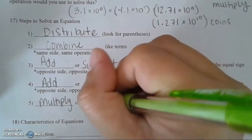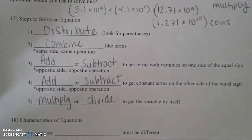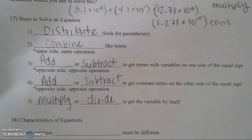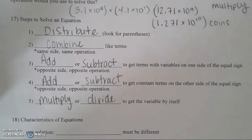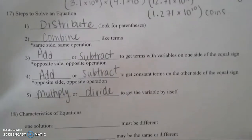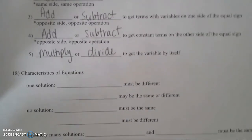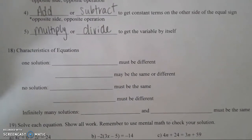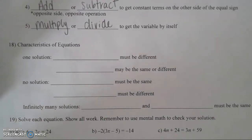To recap: first distribute, then combine like terms, then add or subtract your variables, then add or subtract your constant terms, and finally multiply or divide. Now for characteristics of equations — we have three different types: one solution, no solution, or infinitely many solutions.